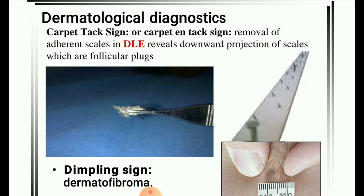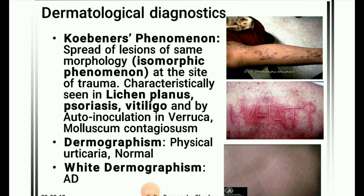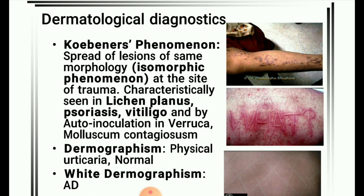Carpet tack sign: removal of adherent scales reveals downward projections which are follicular plugs. Dimpling sign seen in dermatofibroma. Koebner's phenomenon: spread of lesions of the same morphology (isomorphic phenomenon) at the site of trauma, characteristically seen in lichen planus, psoriasis, vitiligo, and by auto-inoculation in verruca and molluscum contagiosum. Dermographism: physical urticaria with normal white dermographism being autosomal dominant.